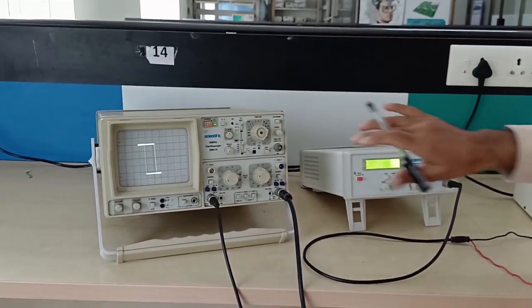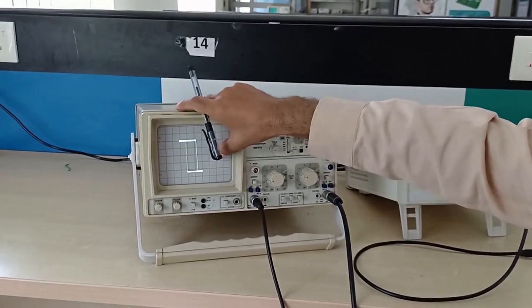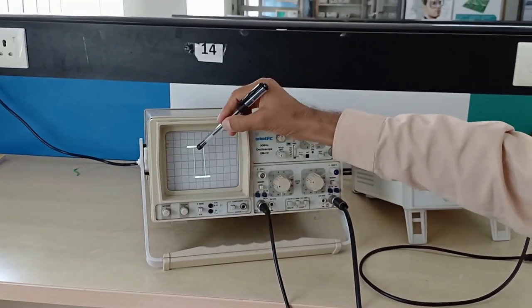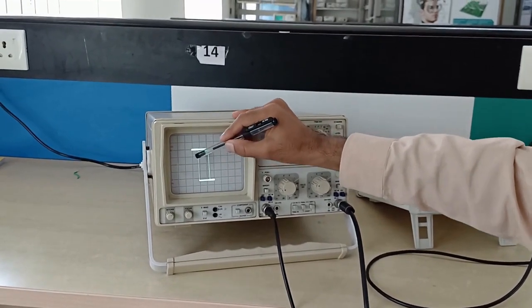This is the hysteresis curve of an inverting Schmitt trigger. Actually we have designed the inverting Schmitt trigger here. The input varies. This is between input voltage and output voltage. This is Vsat plus, Vsat minus, Vsat plus, Vsat minus. This right side line is UTP and the left side is LTP.